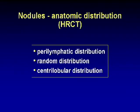Moving to nodular lung disease on high-resolution CT — lung disease characterized primarily by multiple nodules. The most important factor in differential diagnosis of multinodular disease is the specific anatomic distribution of the nodules. There are three patterns we can identify on high-res: perilymphatic, random, and centrilobular. These can be distinguished with a high degree of accuracy, leading to a relatively short differential diagnosis.